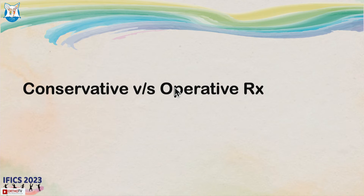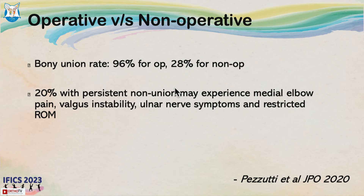Comparing conservative versus operative treatment, broadly there are only two modalities: cast immobilization in situ or open reduction internal fixation. A systematic review published in 2020 found that bony union rates with conservative treatment are only 28% versus 96% for operative treatment. Of those who develop non-union, almost 20% may experience medial elbow pain, valgus instability, ulnar nerve symptoms, and restricted range of motion.